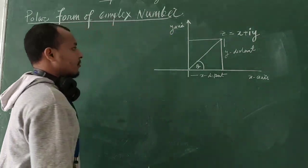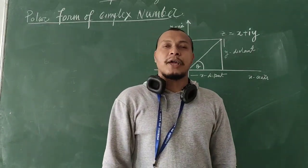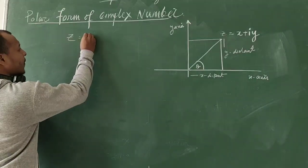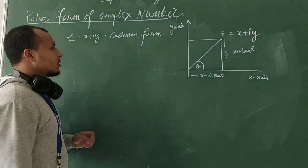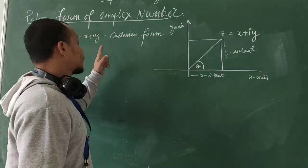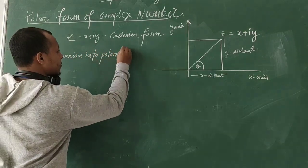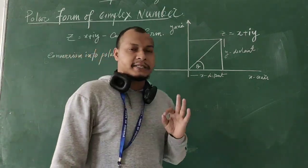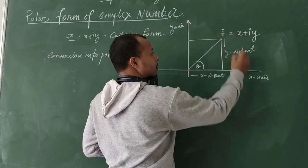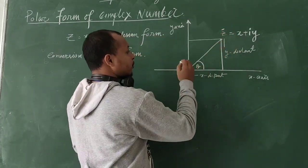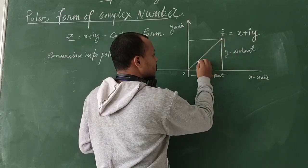So what is a polar form? In the Cartesian form, Z is equal to X plus iY. We are going to convert this into polar form. In polar form, what we need is a point. This is a complex number, and we need the distance from the origin to this point Z.